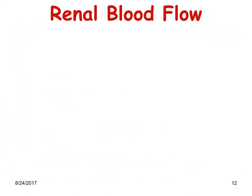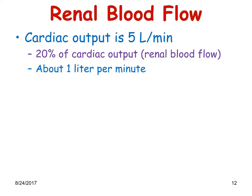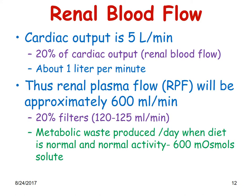Let us look at the renal blood flow, because ultimately the urine that is formed is coming from the blood itself. The cardiac output is around five liters per minute; in other words, 20 percent of the cardiac output will become the renal blood flow — that is about one liter per minute. Of this, the renal plasma flow will be approximately 600 milliliters per minute, of which about 20 percent filters — that is around 120 to 125 milliliters per minute. Metabolic waste produced per day under normal diet and activity is about 600 milliosmol of solute needing to be excreted.